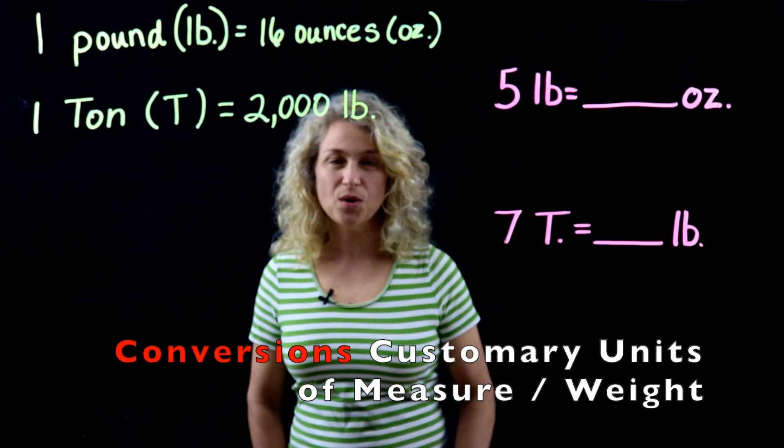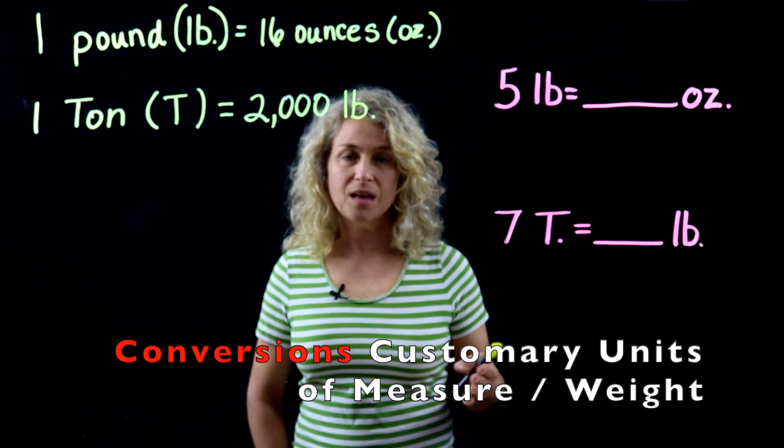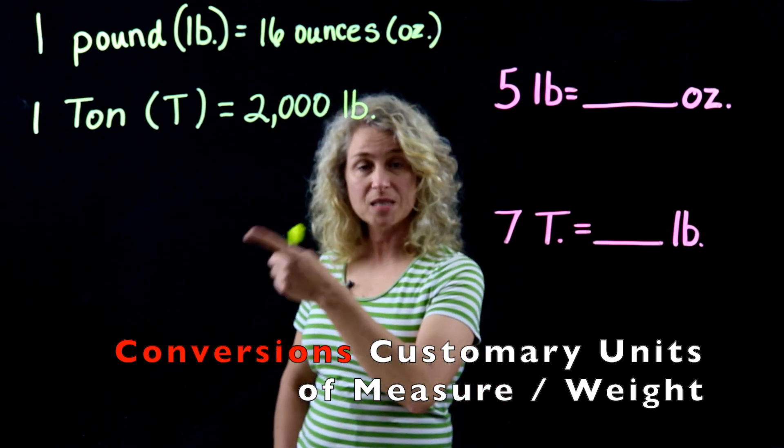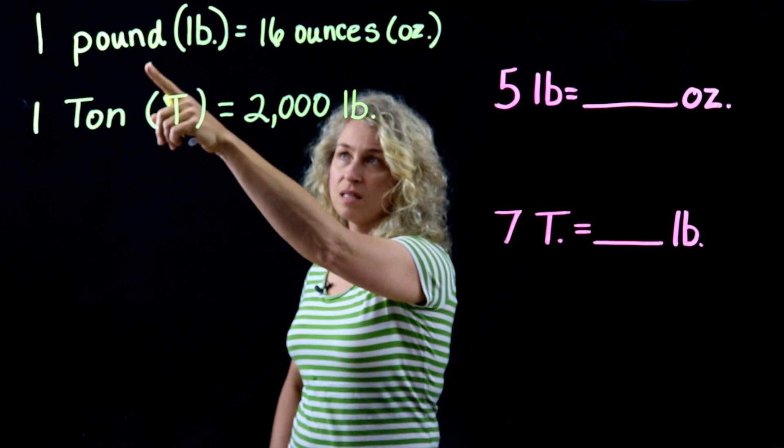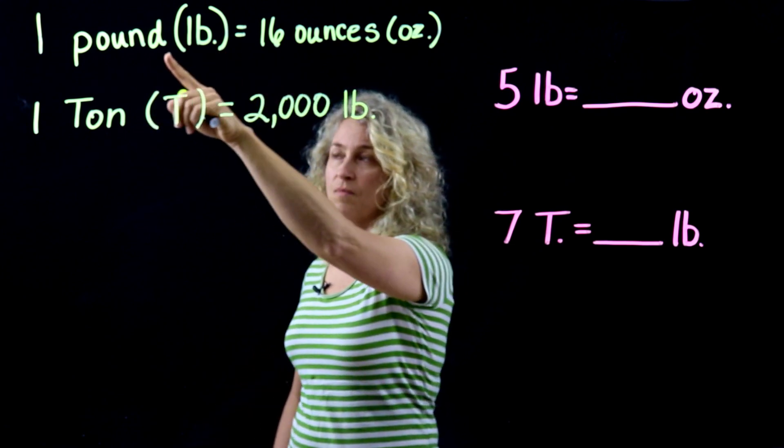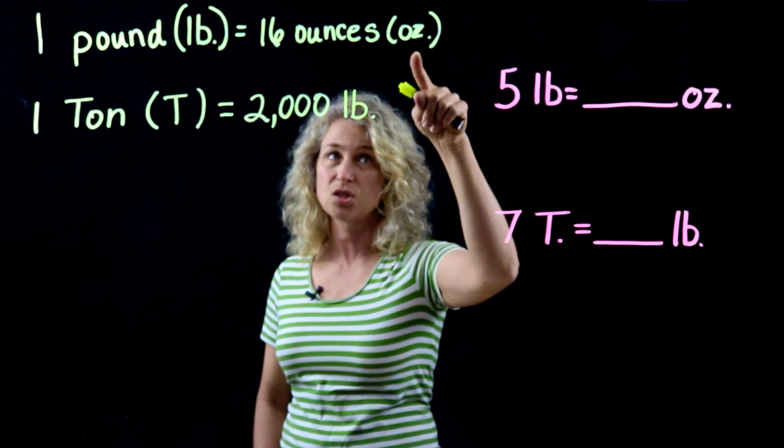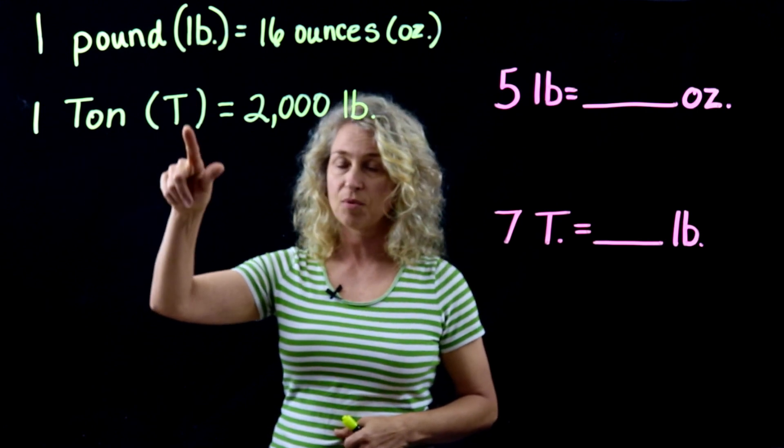Hi, so today we're going to work on conversions and we're going to be converting units of measure, specifically with weight. Notice that I have pounds, and this is the way you abbreviate pounds: lb. For one pound there are 16 ounces, and this is the abbreviation for ounce: oz. For one ton, the abbreviation is T, and there are 2,000 pounds in one ton.